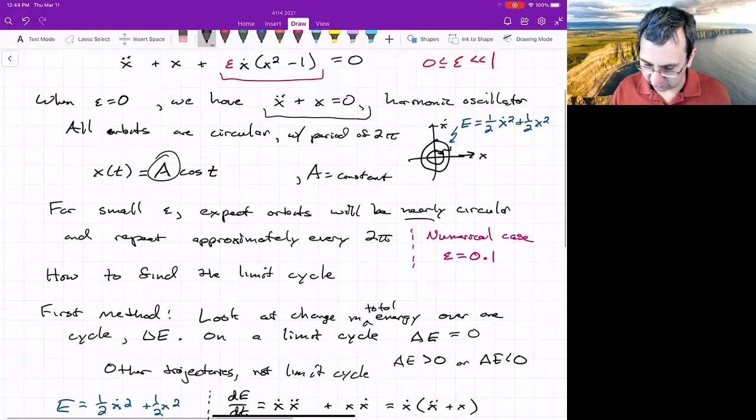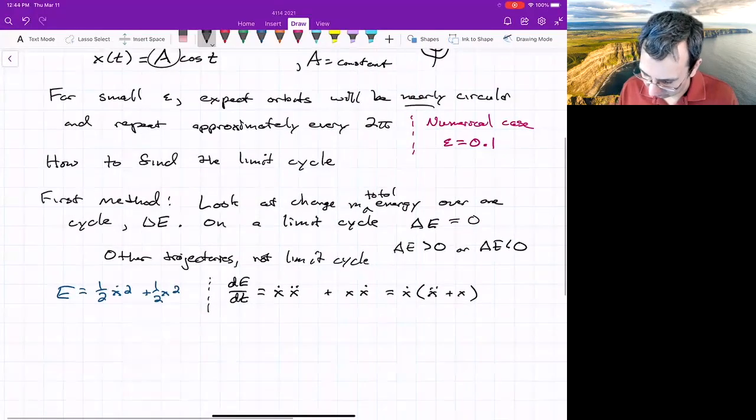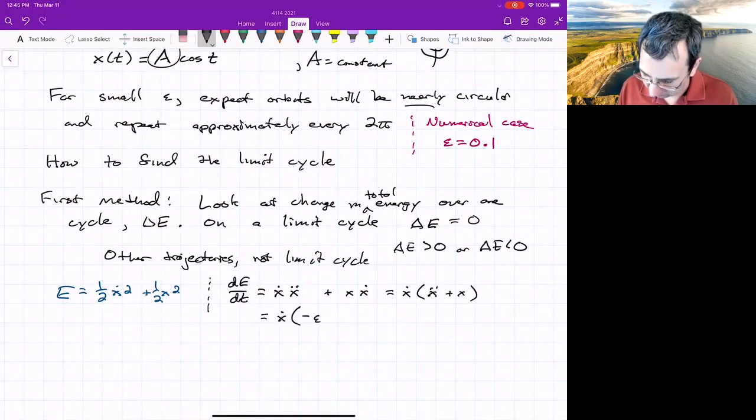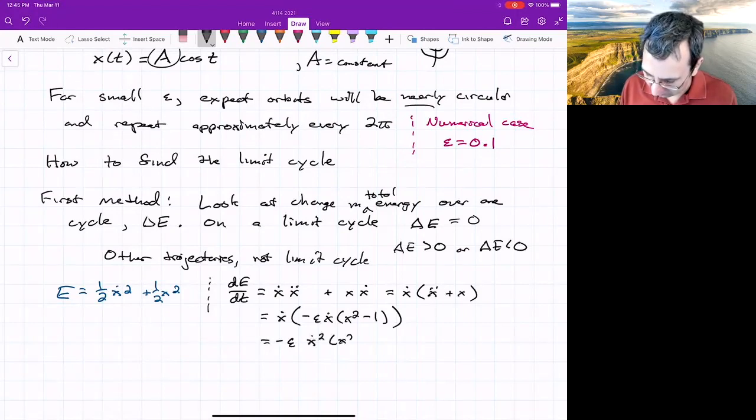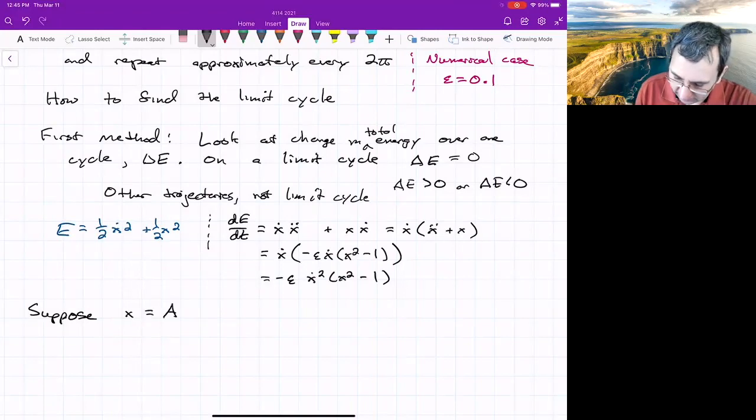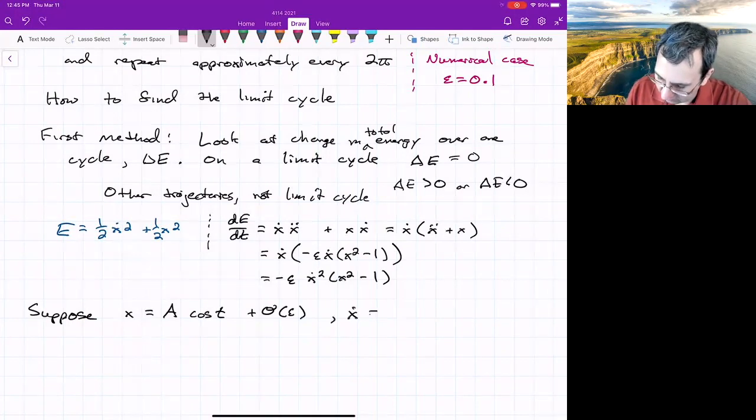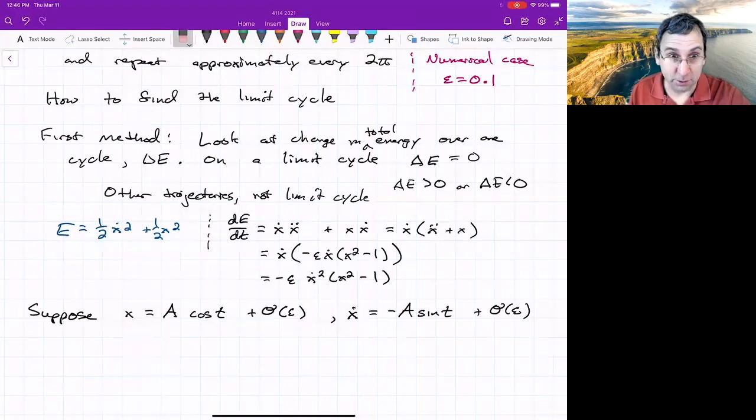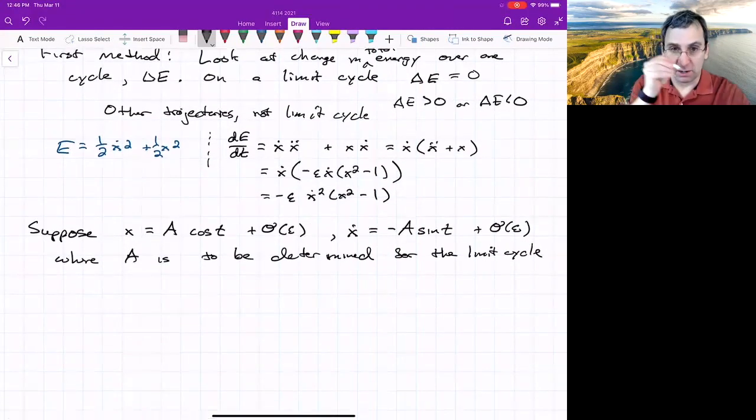We're going to suppose that all trajectories will look like A cosine t plus something of order epsilon. That's what that big O means. So if that's x, then what's x dot? x dot is negative A sine t plus order epsilon. A has yet to be determined for the limit cycle. And now we'll do a calculation of what delta E is.